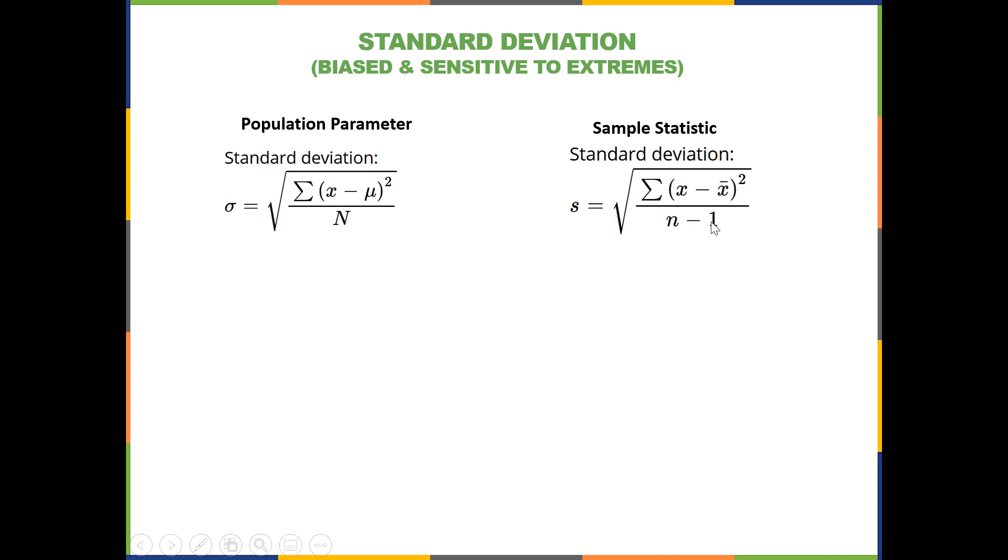The reason we do that has to do with the fact that it targets the true population standard deviation better. And that is related to the use of the sample mean, which is the estimated mean, rather than the true population mean when calculating these deviations. Dividing by n minus 1 is necessary because of the use of that estimated mean.